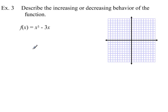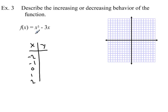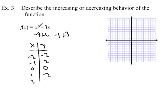First, we need to sketch the graph. We can use a graphing calculator or plot points. I'll make an x-y table. At x equals -2: (-2) cubed is -8, minus 3 times -2 is +6, giving y equals -2. At x equals -1: (-1) cubed is -1, minus 3(-1) is +3, giving y equals 2. At x equals 0: y equals 0. At x equals 1: 1 minus 3 equals -2. At x equals 2: 8 minus 6 equals 2.